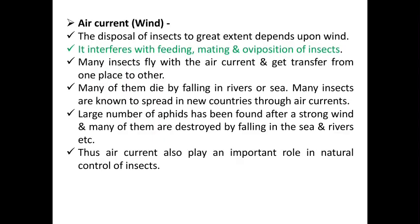The next abiotic factor is air current or wind. The dispersal of insects depends to a great extent on winds. It interferes with feeding, mating and oviposition of insects. Many insects fly with the air current and get transferred from one place to another. Many of them die by falling into rivers or seas. Many insects are known to spread to new countries through air currents. A large number of aphids have been found after strong winds and many are destroyed by falling into seas and rivers. Thus air currents play an important role in the natural control of insects.